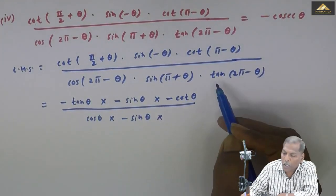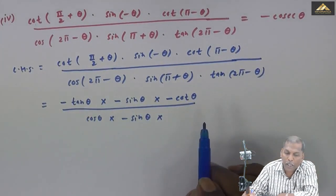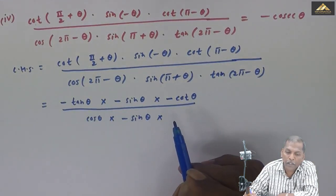In the denominator, tan of 2 pi minus theta is minus tan theta.